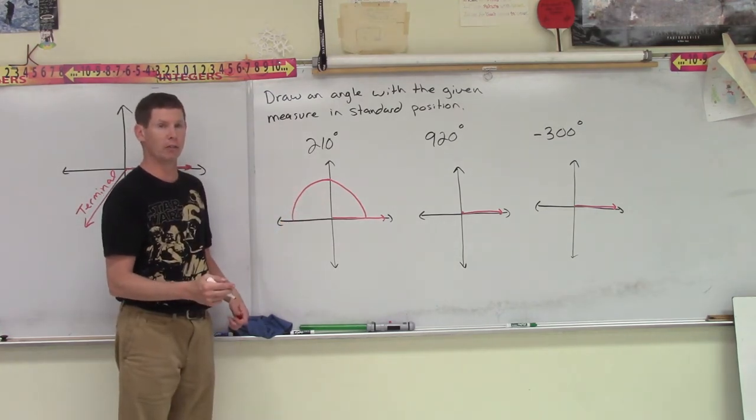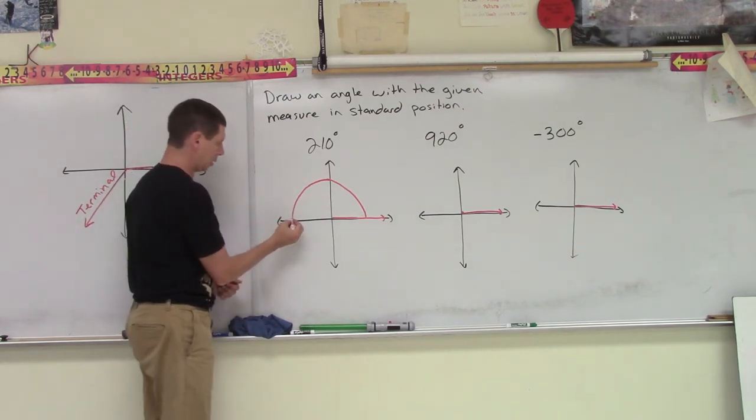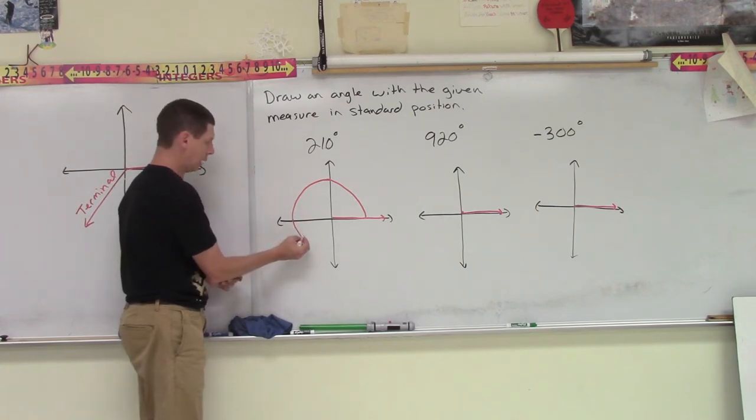We've spun so far. If you think of that second hand moving, I guess it would be moving backwards here. So we have 30 more degrees to go. So once you go about 30 more degrees, that's where we end.